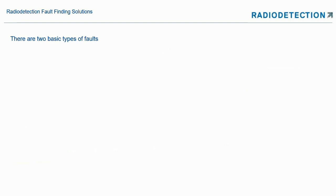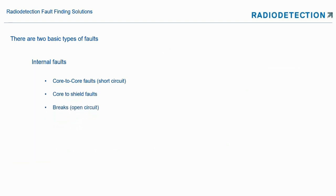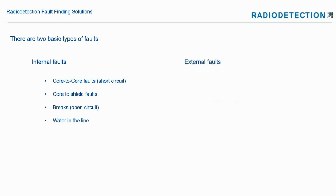There are two basic types of faults when it comes to a cable. We have internal faults — these could be core to core, or core to sheath, or even a break, an open circuit. Sometimes we get water in the line, usually caused initially by a sheath fault or insulation damage. Then we have external faults: sheath faults, outer insulation faults, and pipe coating faults.